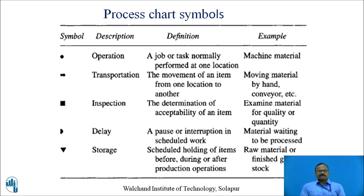These are the process chart symbols. The first is a circle, representing an operation — any operation performed on the raw material or work piece, a job or task normally performed at one location, such as turning, milling, or any machining operation. The second symbol is transportation, which deals with the movement of an item from one location to another, either manually or by conveyor. In a product-type layout, material moves horizontally from one station to another.